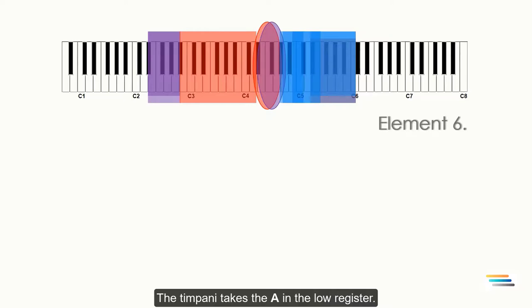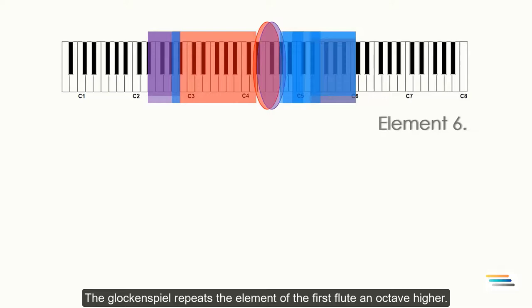The timpani takes the A in the low register. The glockenspiel repeats the element of the first flute an octave higher.